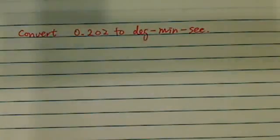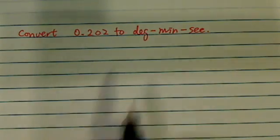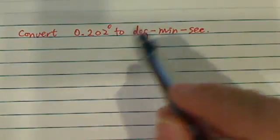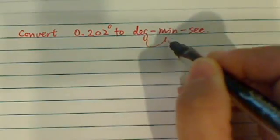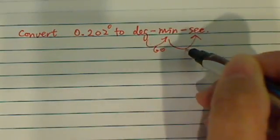Here we have an interesting question of converting from a degree, 0.202 degree to degree minute second. So what we do is the conversion factor for each one of them is 60, it's not 100.